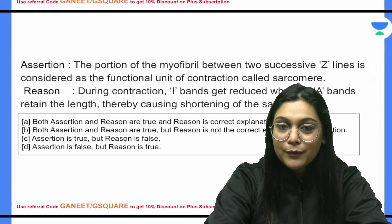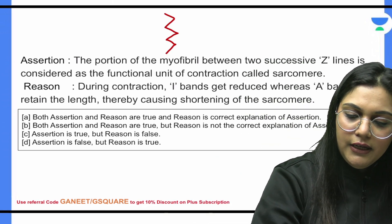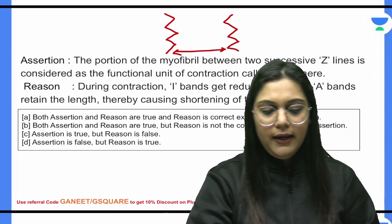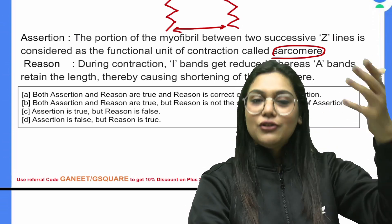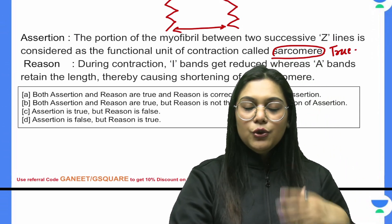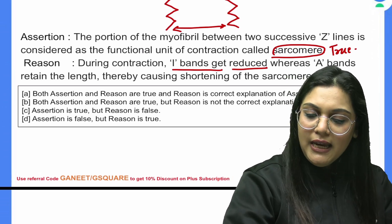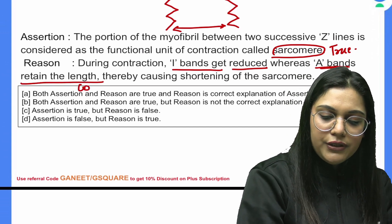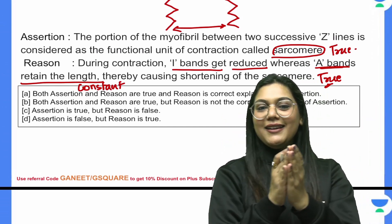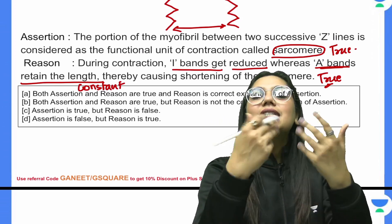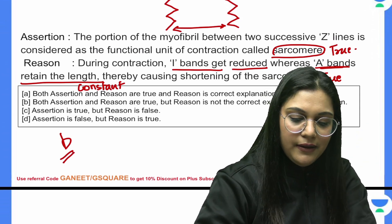Question 5: The portion of the myofibril between two successive Z lines is called the sarcomere — the functional unit of contraction. During contraction, the I-band length decreases while the A-band retains its constant length — this is what NCERT states. The reason does not explain the assertion correctly, so the answer is B option.